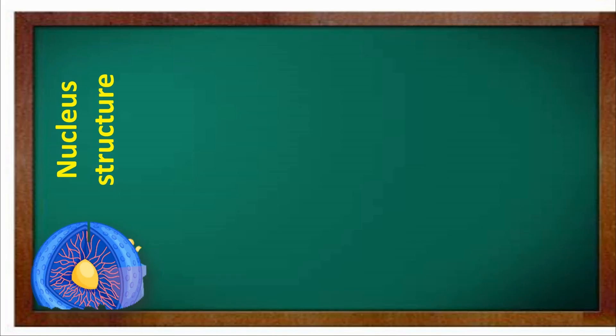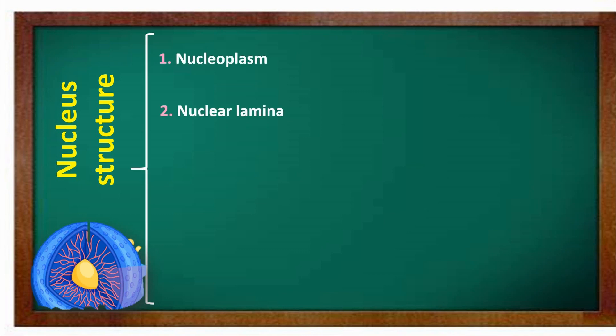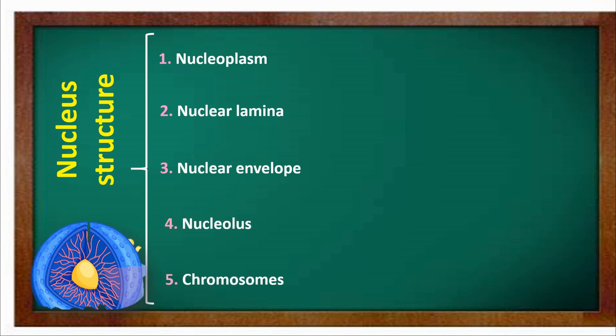Nucleolus structure. The Nucleolus has five parts in its structure: nucleoplasm, nuclear lamina, nuclear envelope, nucleolus, and chromosomes.